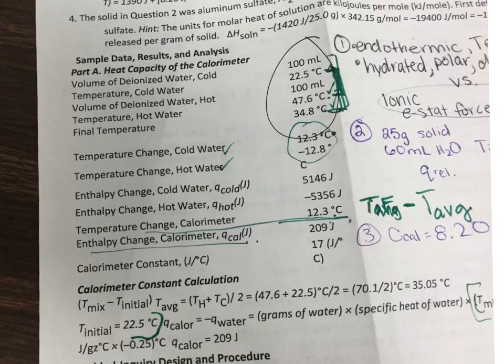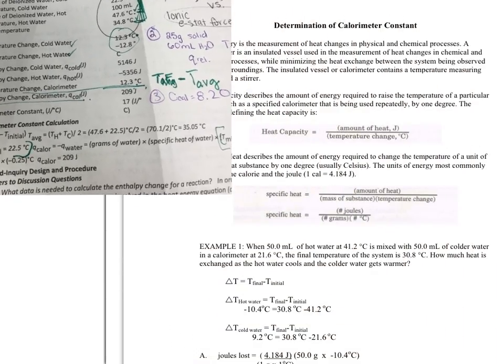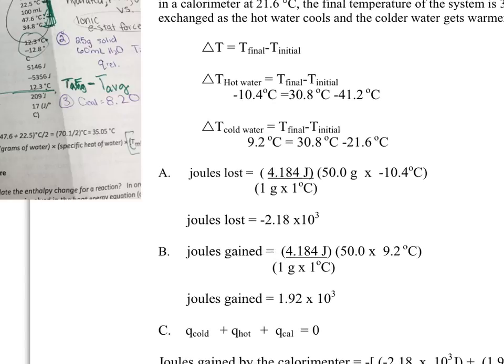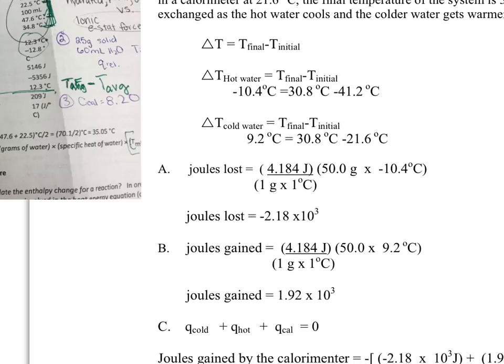When you get to your enthalpy change, the Q cold, we're going to be referring to this little sheet right here, okay? So we've gotten our temperature final minus initial for hot water, cold water.